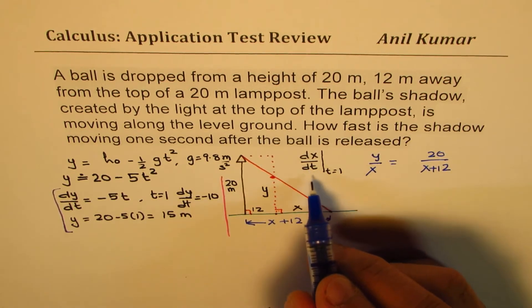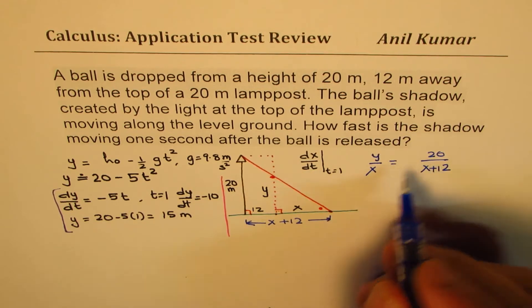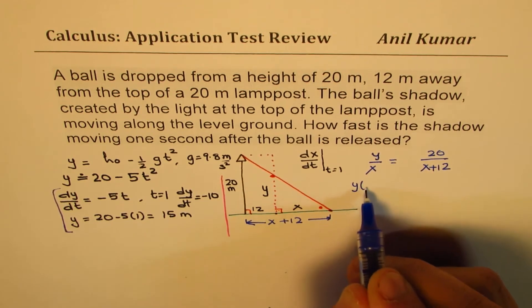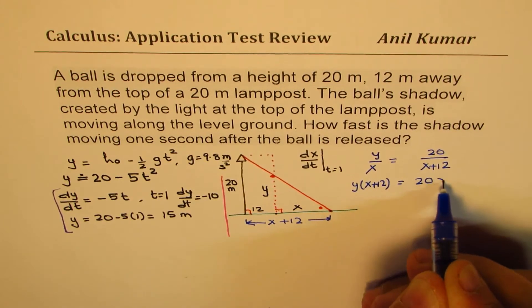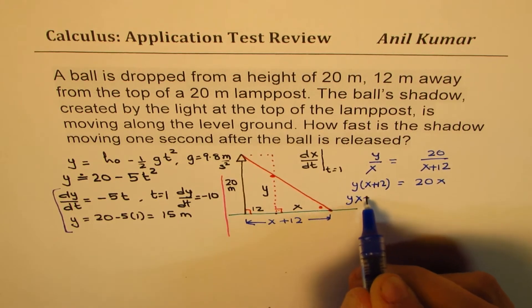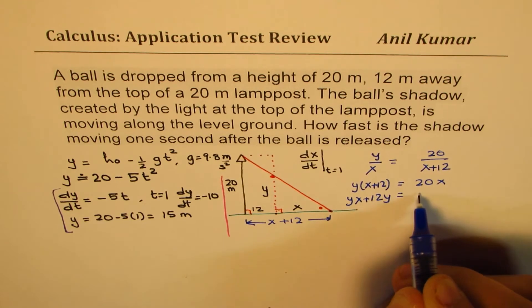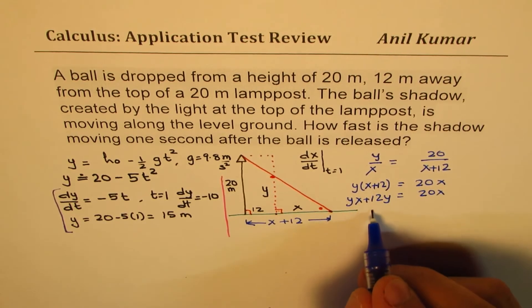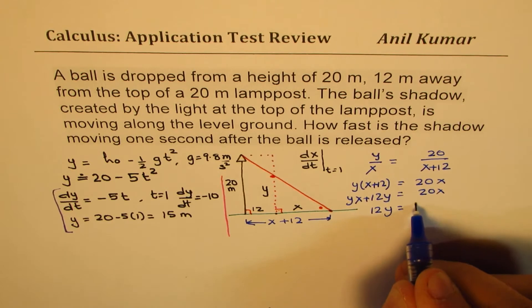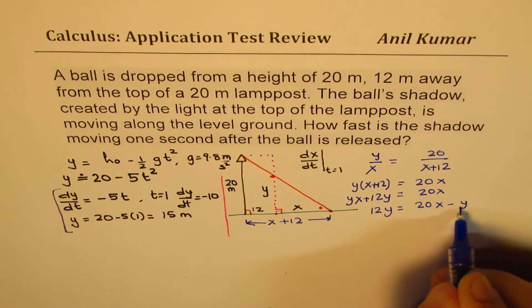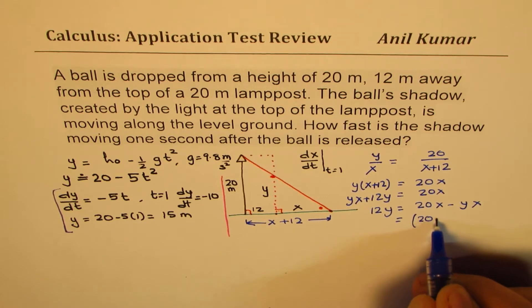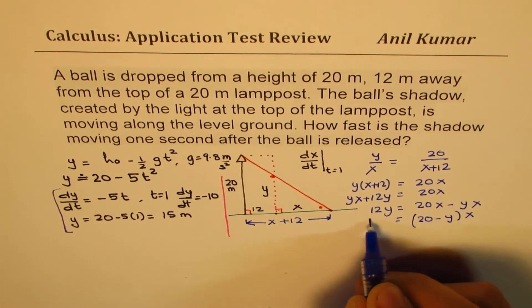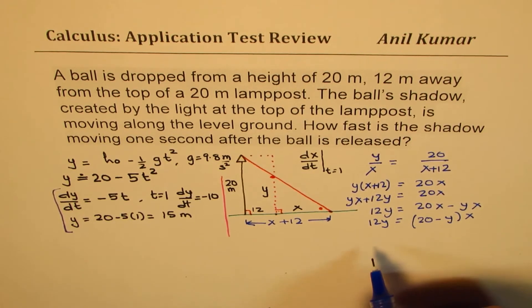We want dx/dt, so we'll isolate x. Let's cross multiply, so we get y times (x plus 12) equals 20x. yx plus 12y equals 20x. Taking this on the right side, we get 12y equals 20x minus yx. Taking x common, we get (20 minus y) times x equals 12y.